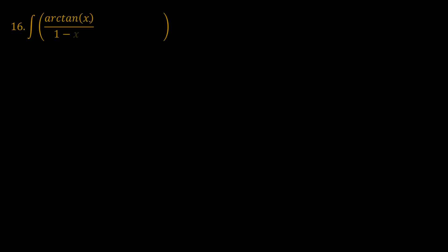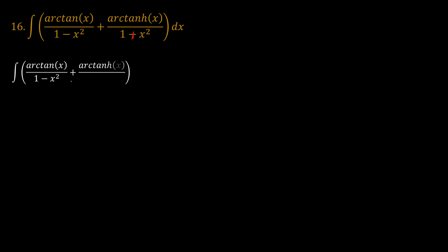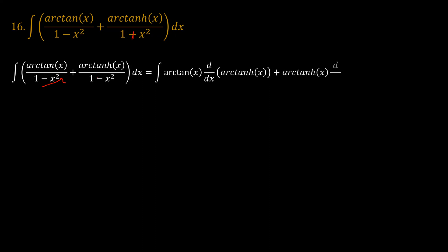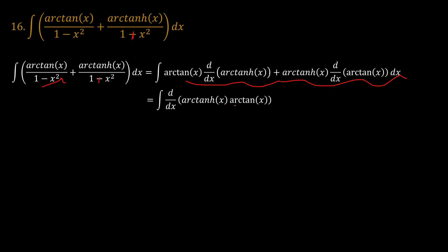Problem 16 is the integral of arctan(x)/(1−x²) + arctanh(x)/(1+x²). We recognize that 1/(1+x²) is the derivative of arctan(x), and 1/(1−x²) is the derivative of arctanh(x). So the integrand is the derivative of the product arctan(x)·arctanh(x). Therefore the answer is arctan(x)·arctanh(x) + C.